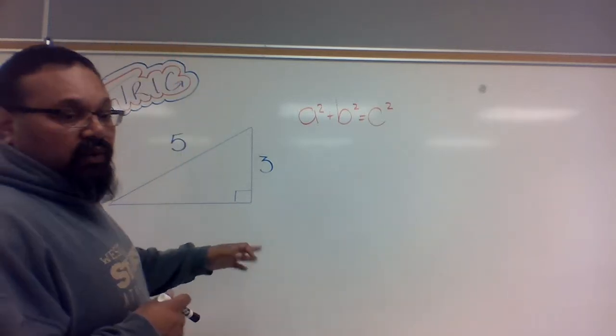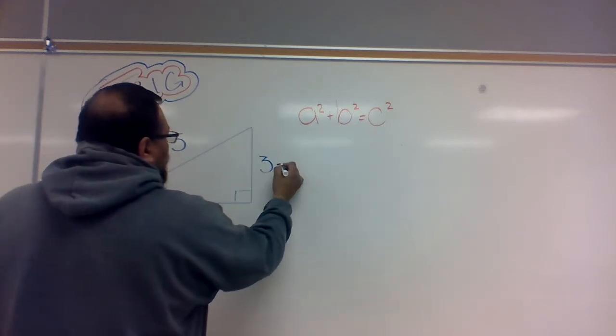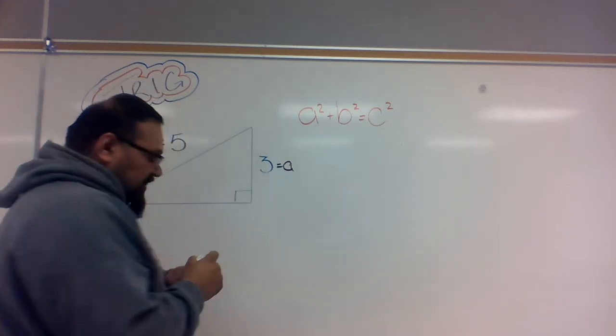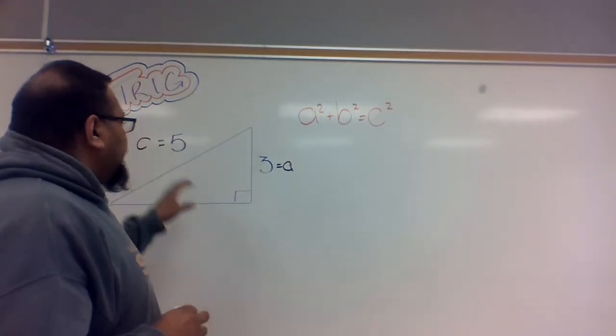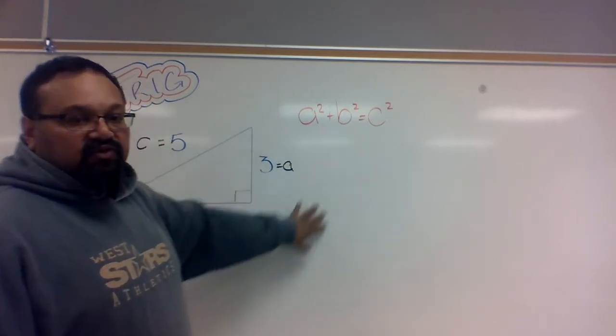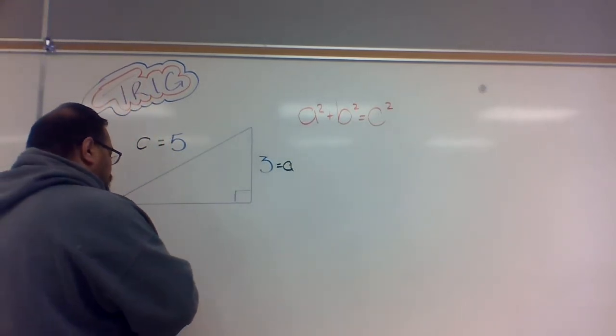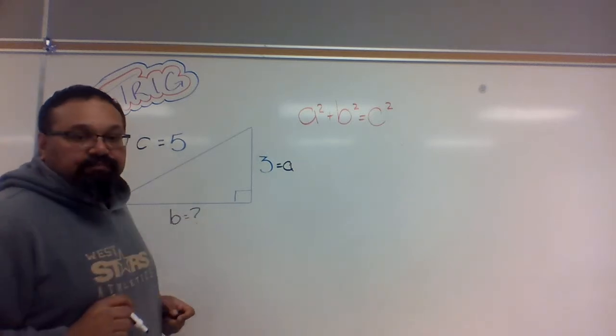So first we identify what we have. I have C and I have A. Now, having labeled C and A, what I do is now I manipulate the formula because I don't know the value of my B.